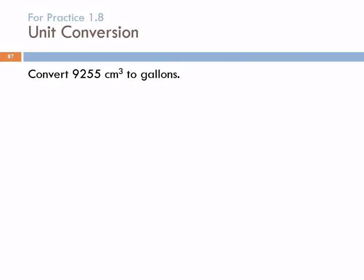Convert 9255 cubic centimeters to gallons. Again, identify where we are and where we're going. So we're starting with 9255 cubic centimeters. We're going to gallons.